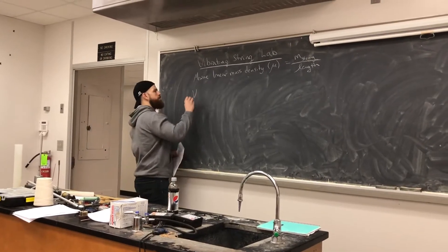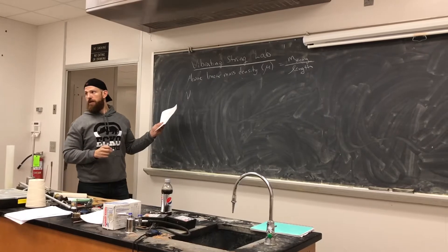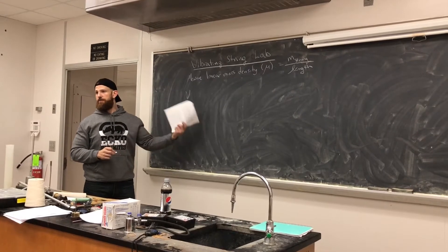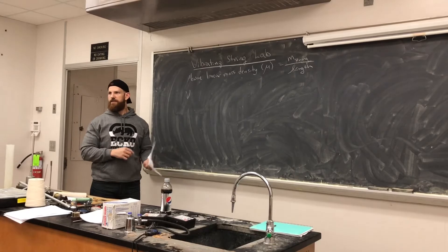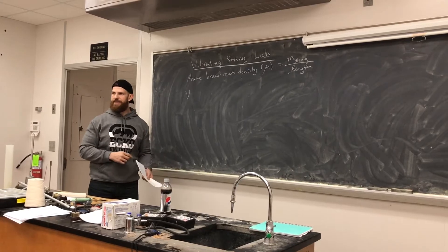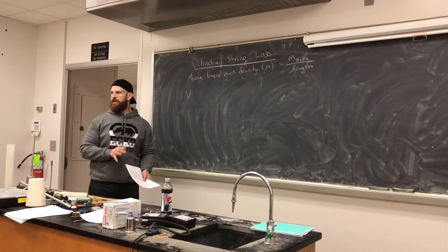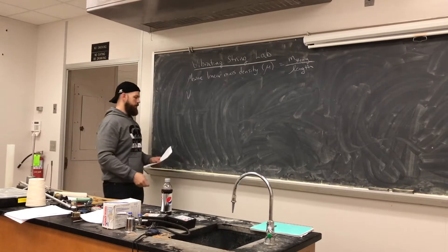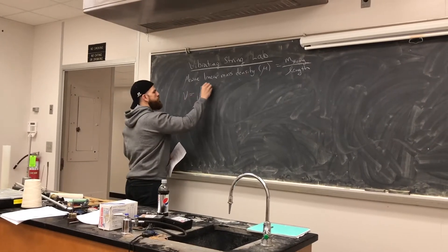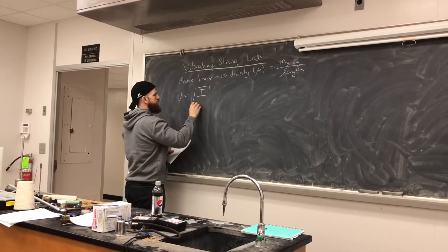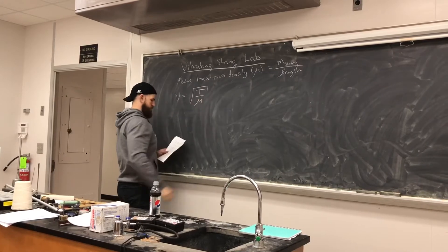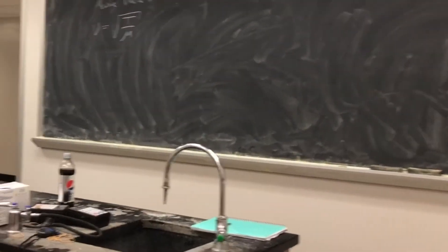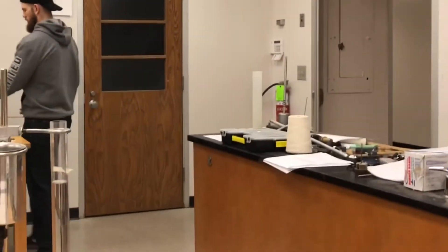I'm going to call this curvy V and call it nu. The reason I don't call it V is because it's not regular velocity — it's wave velocity. That's why we use Greek symbols analogous to the ones you use regularly. The equation is: V equals the square root of the tension divided by mu.